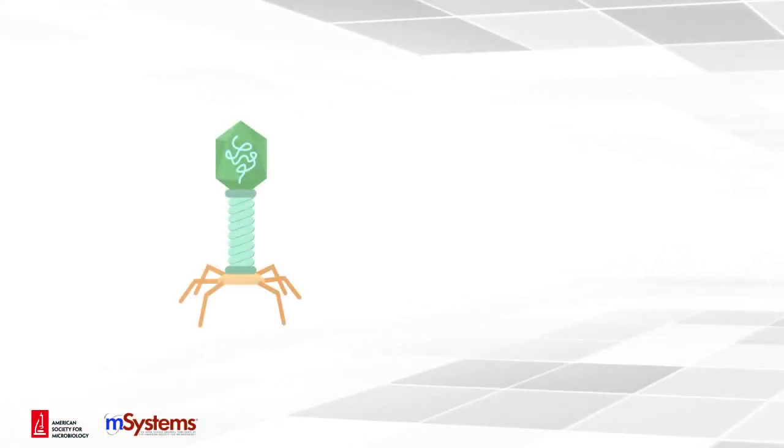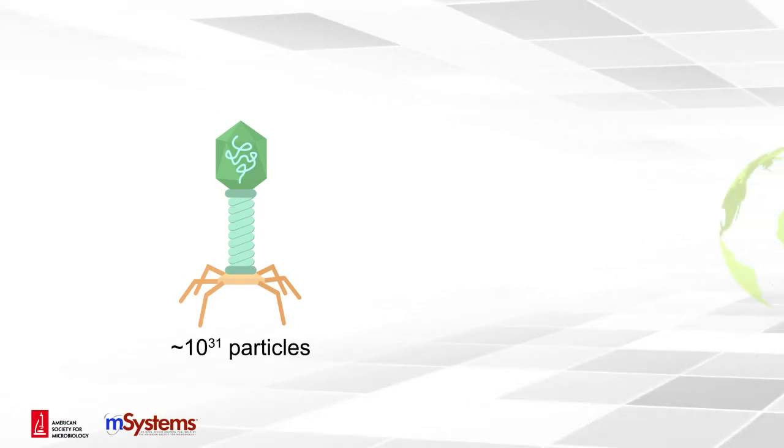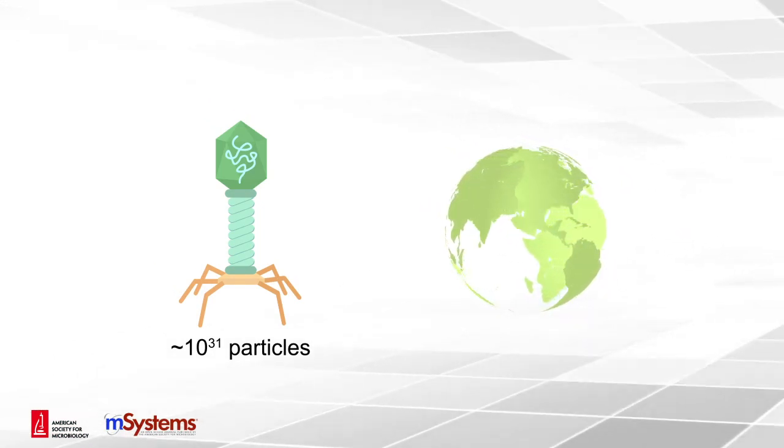With an estimated population of about 10 to the 31st particles, phages are recognized as the most abundant biological entities on Earth.